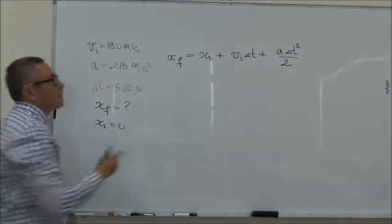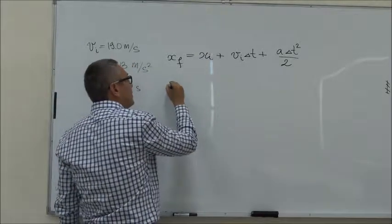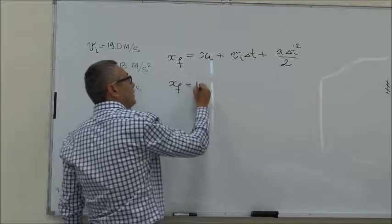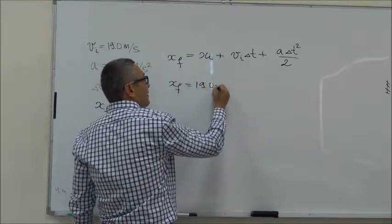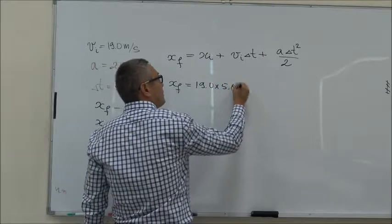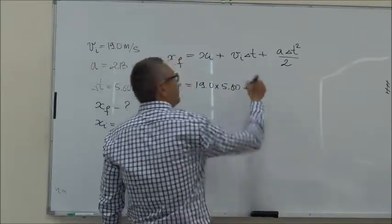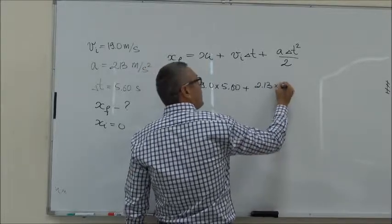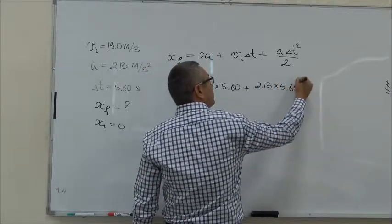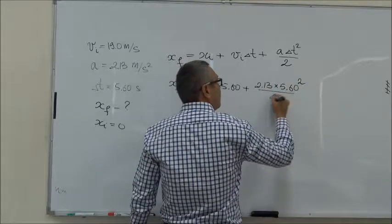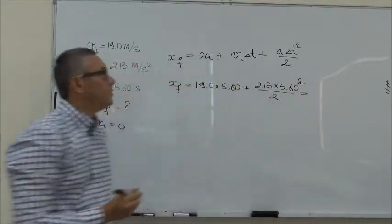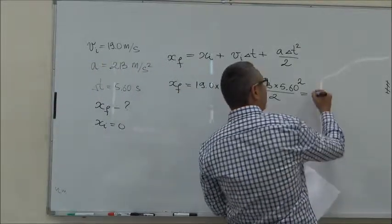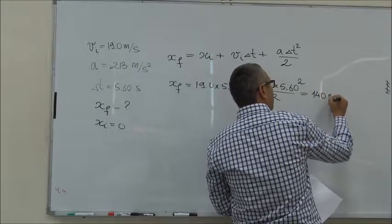So in our case x initial is 0, so we can just say x final is equal to V initial which is 19 times delta t which is 5.6 plus A which is 2.13 times delta t squared over 2. And if you do the math here, this gives you 140 meters.